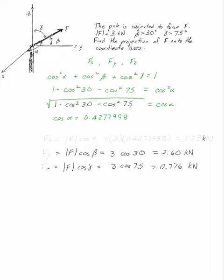I don't really need to figure out what alpha is because what I want to know is what Fx is. Fx is the magnitude of F times cosine alpha. So as soon as you've got that, you've got 3 times 0.4277998. This is, to 3 significant digits, 1.28 kilonewtons. You can do the same thing with Fy and Fz.